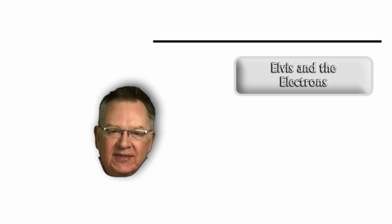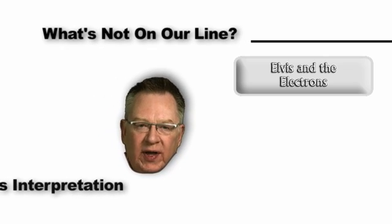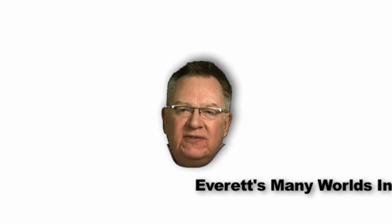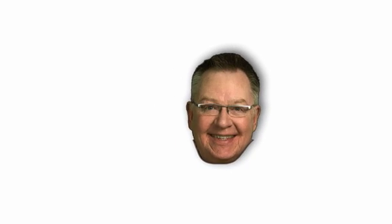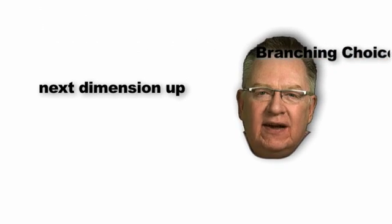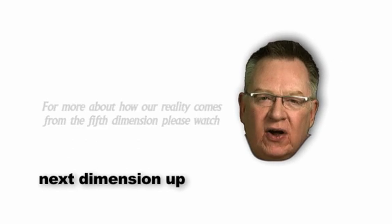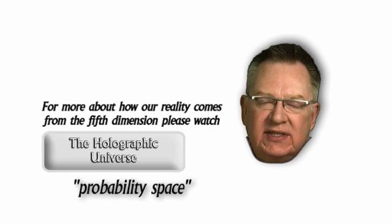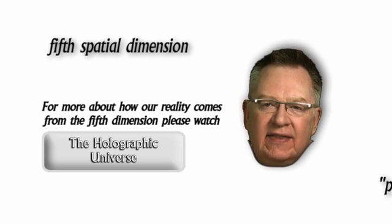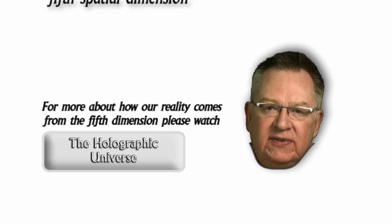As we discussed in 'Elvis and the Electrons,' one of the commonly used examples of a universe we're not in — a point that is not on our line — is that Everett's many-worlds interpretation says there must be a version of our universe where it's 2009 and Elvis is still alive. I'm insisting that these branching choices, as per the definition of spatial dimensions, come from the next dimension up above our space-time: a constantly evolving probability space, which is the fifth spatial dimension. The fact that Kaluza convinced Einstein that the equations for gravity and light for our universe are resolved in the fifth dimension also ties in nicely with this idea.